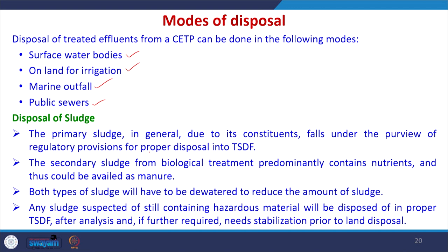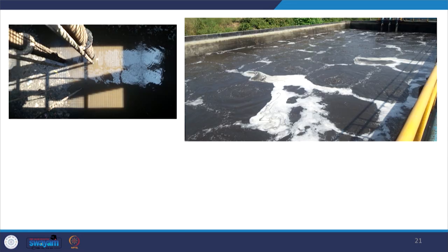Primary sludge, due to its constituents, falls under the purview of regulatory provisions for proper disposal at TSDF (Treatment, Storage and Disposal Facility). The secondary sludge from biological treatment predominantly contains nutrients and would be available as manure. Both types of sludge would have to be dewatered to reduce the amount of sludge. Any sludge suspected of still containing hazardous material has to be disposed of in a proper TSDF after analysis.